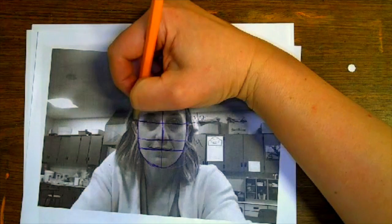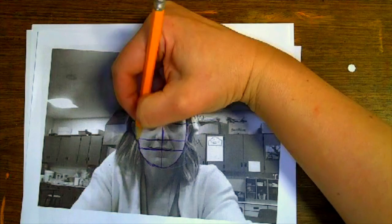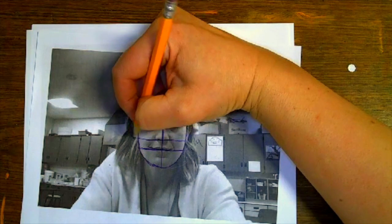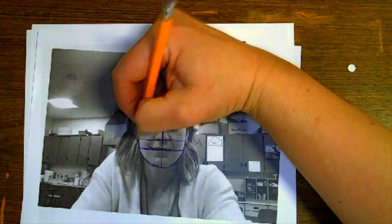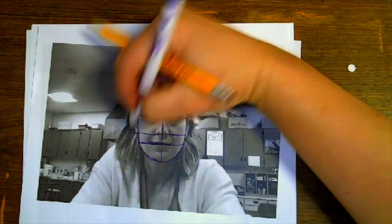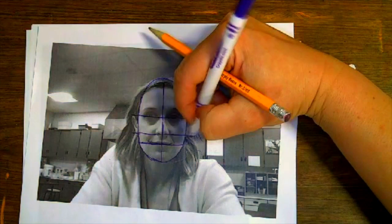Now pay close attention here to the ears. The ears, see how mine fit? They are a little bit longer. Top of the ear is in line with the eyes, bottom of the ear is in line with the bottom of the nose. So the ears are placed in between the eyes and the nose lines.